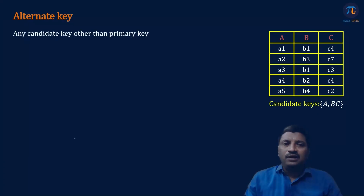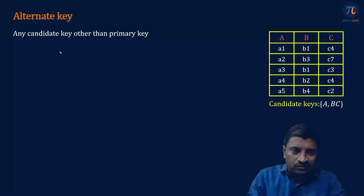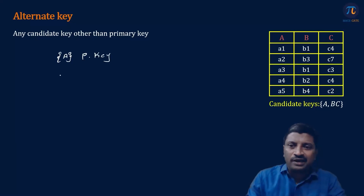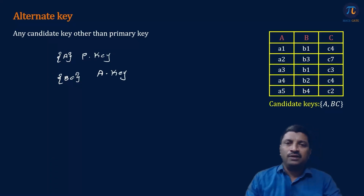The next type is alternate key — any candidate key other than the primary key. For example, for this relation we have chosen A as the primary key. The remaining candidate keys — that is the set {B, C} — are called alternate keys. Here we have only one alternate key.